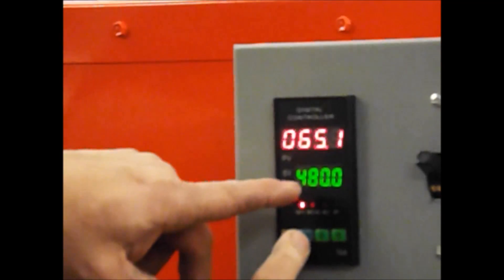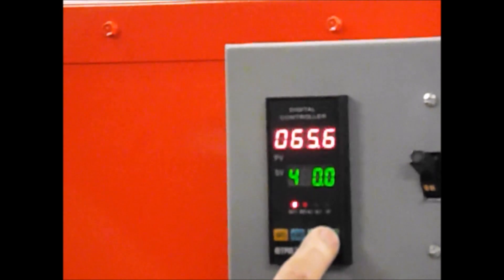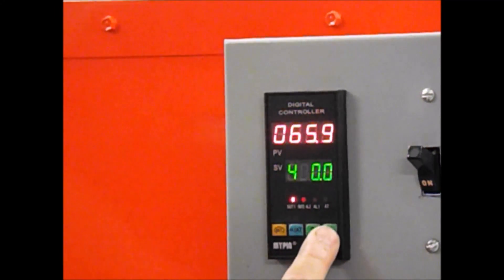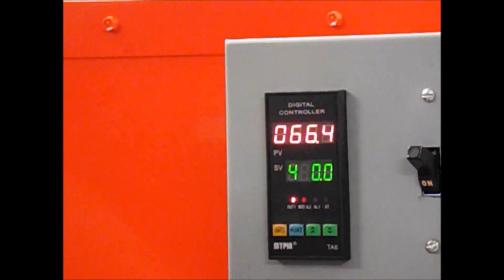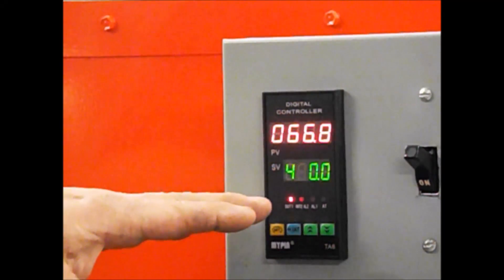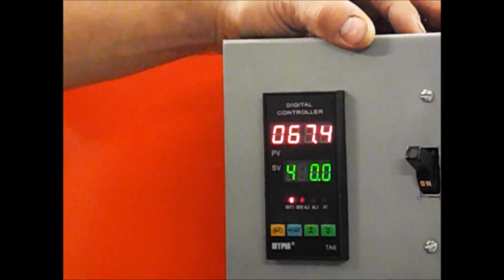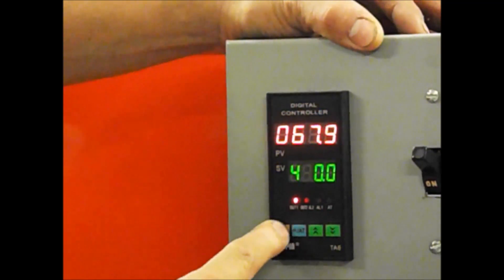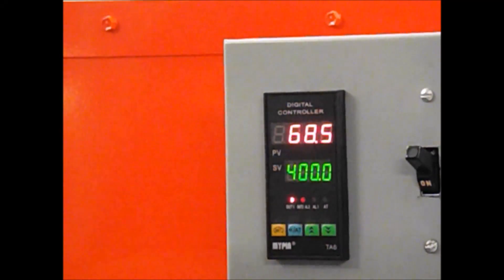I'm going to go back to the number eight and lower it to zero using the arrow going down. When you're comfortable with the temperature that you want, you can press the yellow button and the system is set up.